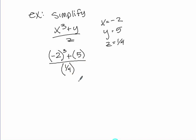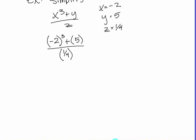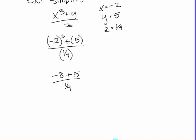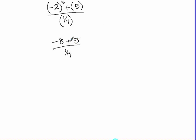This starts to get a little ugly because of the fractions, but we want to simplify as much as we can. I would start by cubing: negative two cubed gives negative eight, plus five, and we can leave that one-fourth in the denominator for now until we simplify a little more.